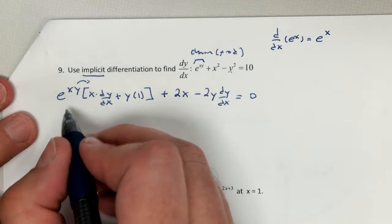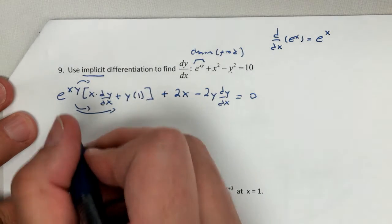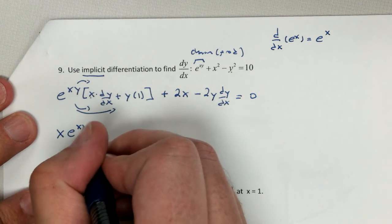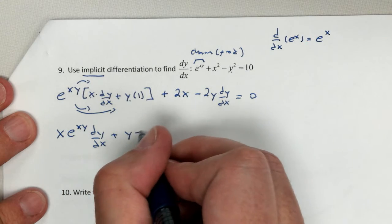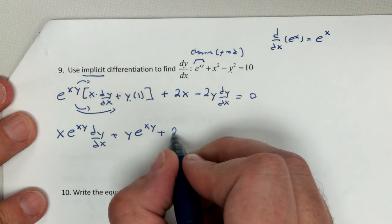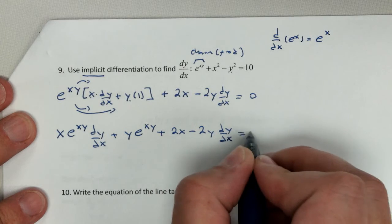Before I solve for dy dx, I would definitely recommend expanding this. So this is going to become x e to the xy dy dx plus y e to the xy plus 2x minus 2y dy dx, equal to zero.